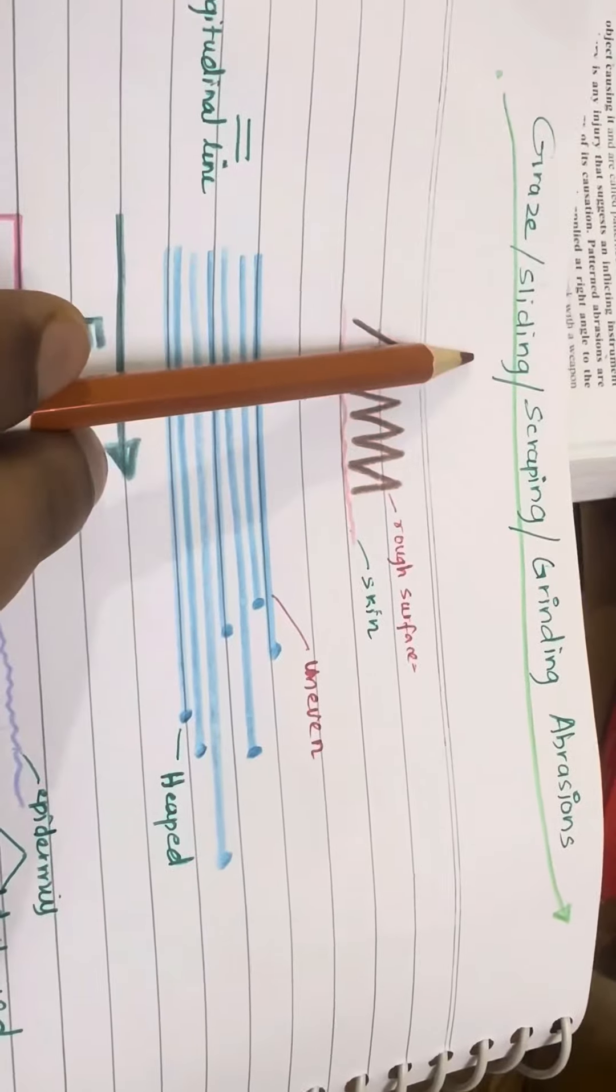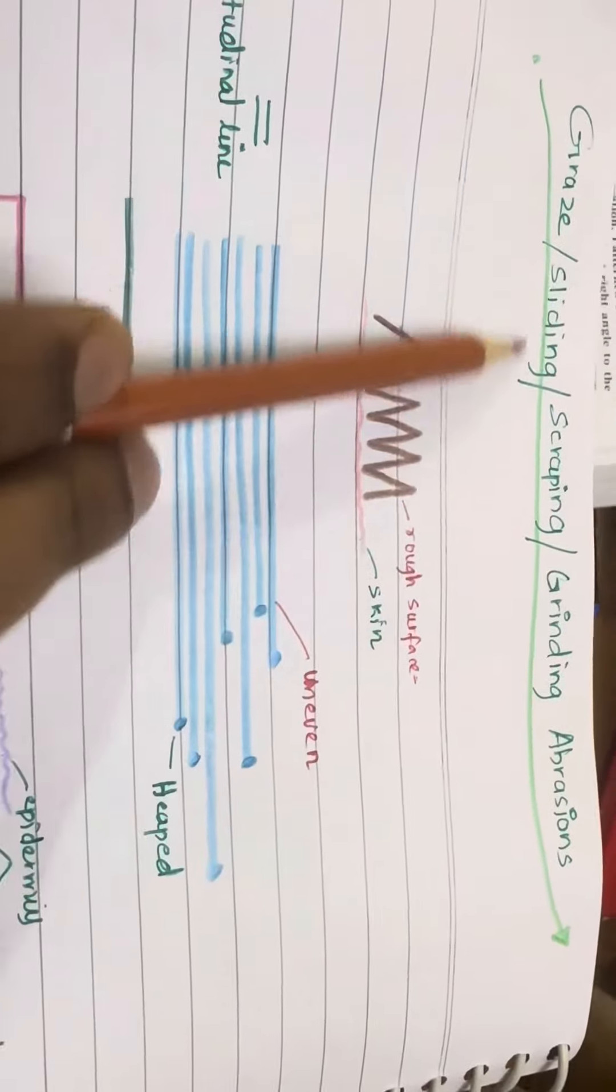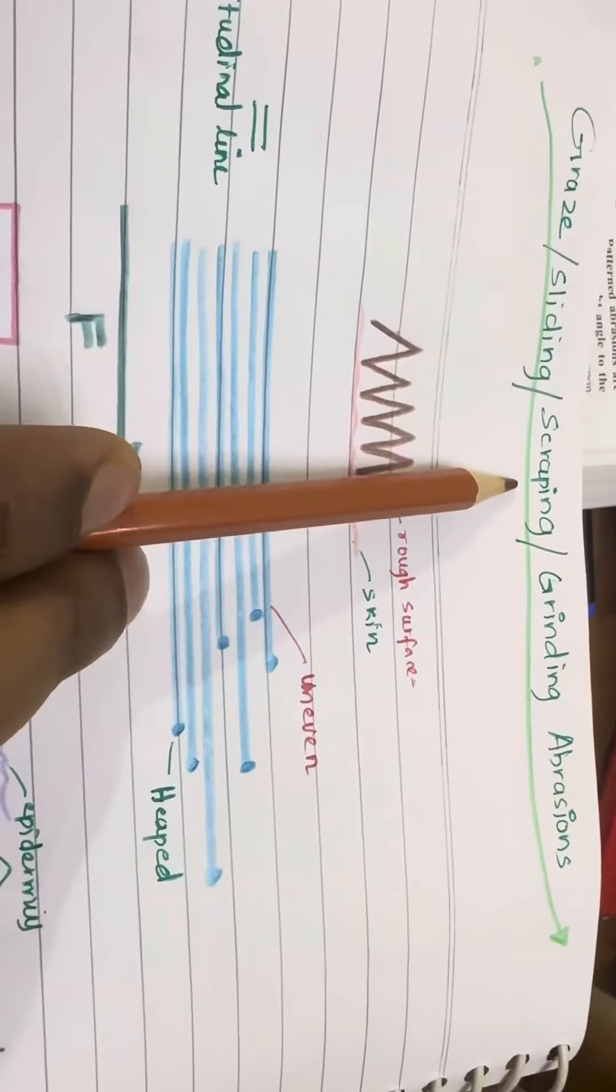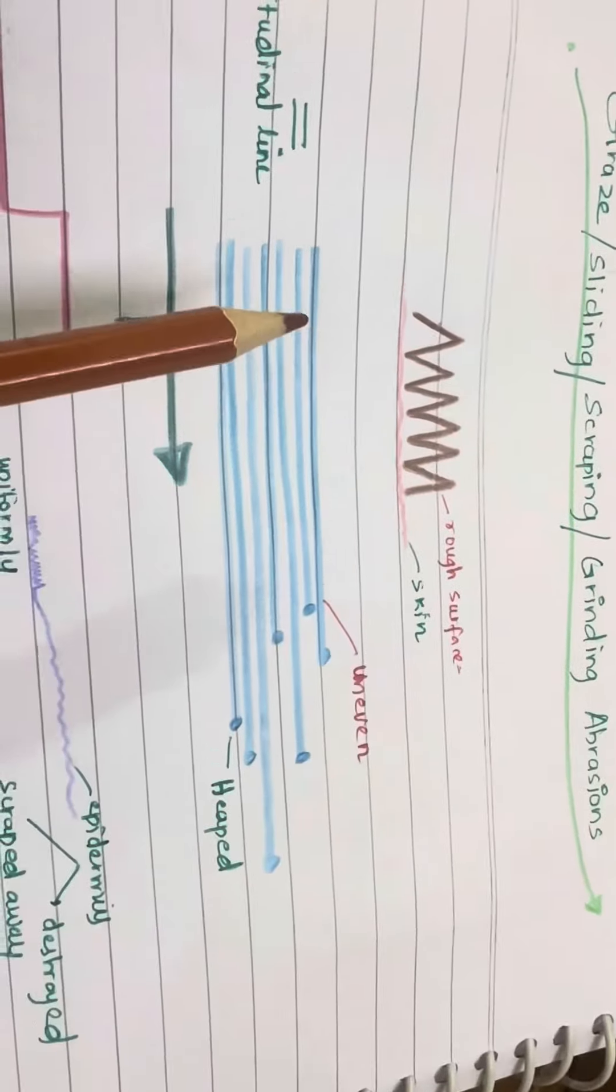Graze abrasion, or sliding abrasion, or scraping abrasion, or grinding abrasion. It's all the same name: graze, or sliding, or scraping, or grinding abrasion. They are the most common type.